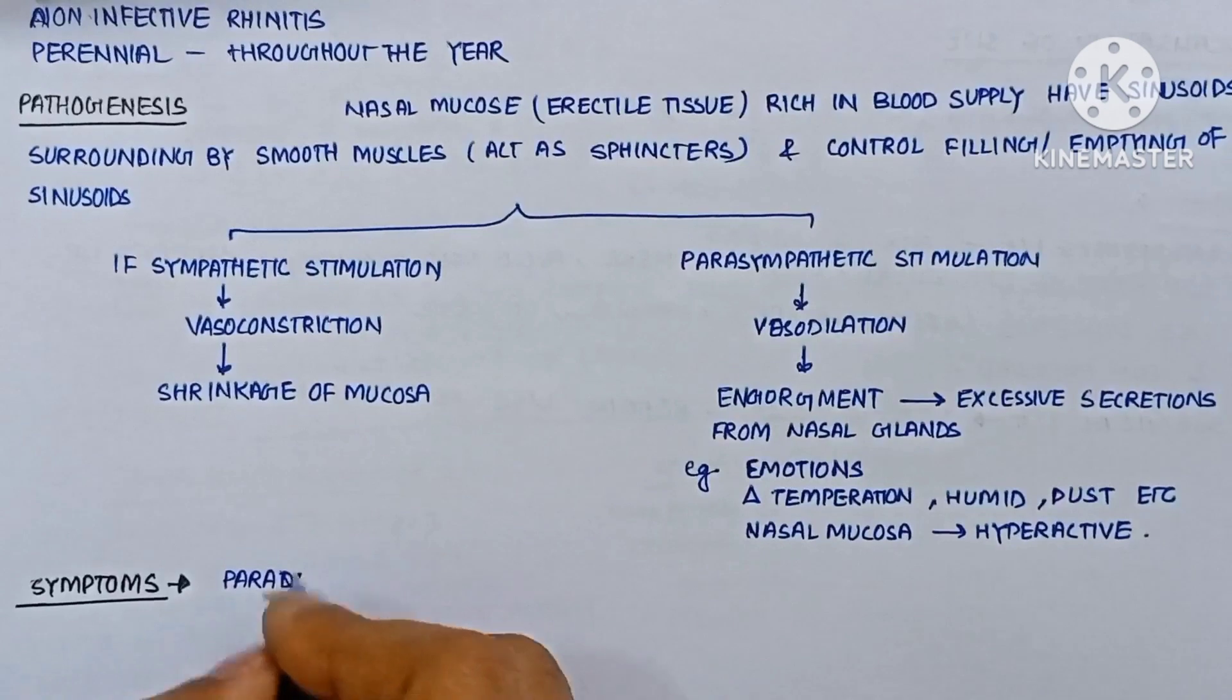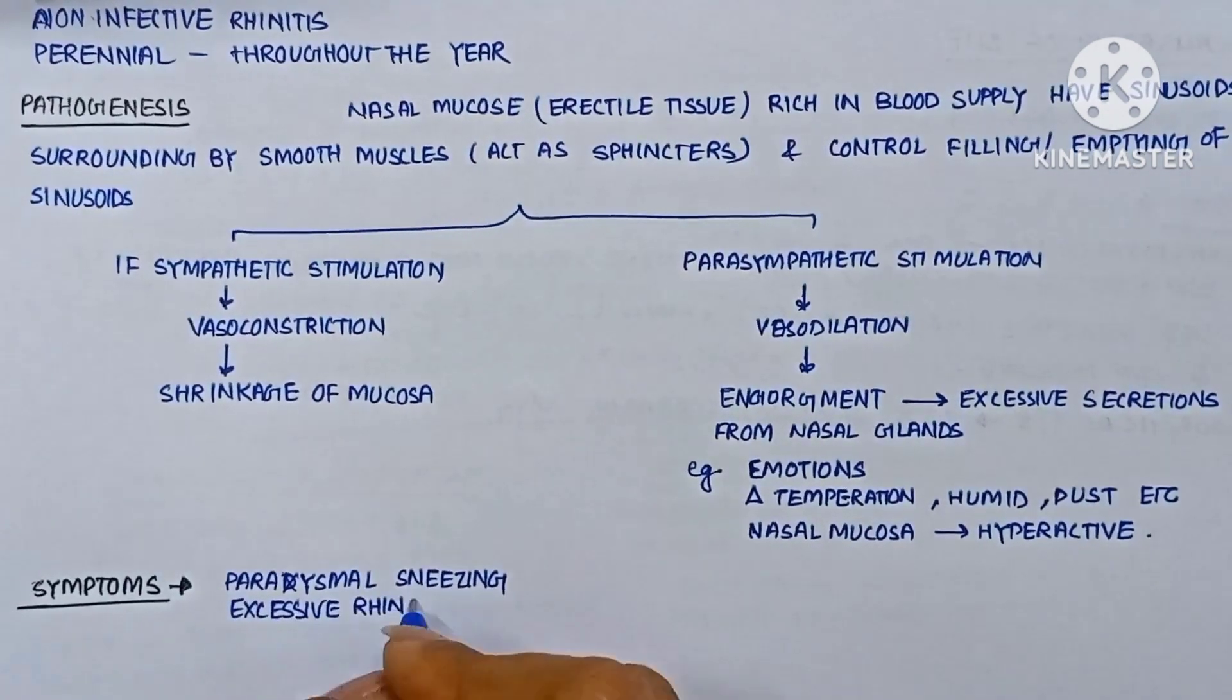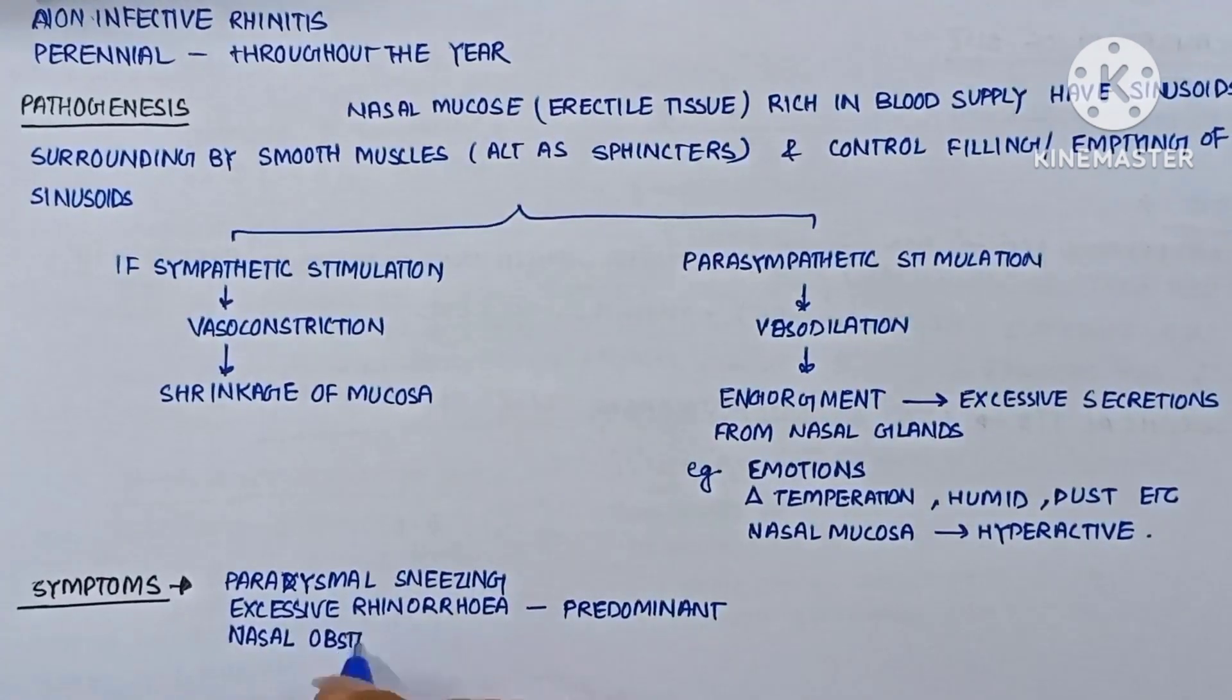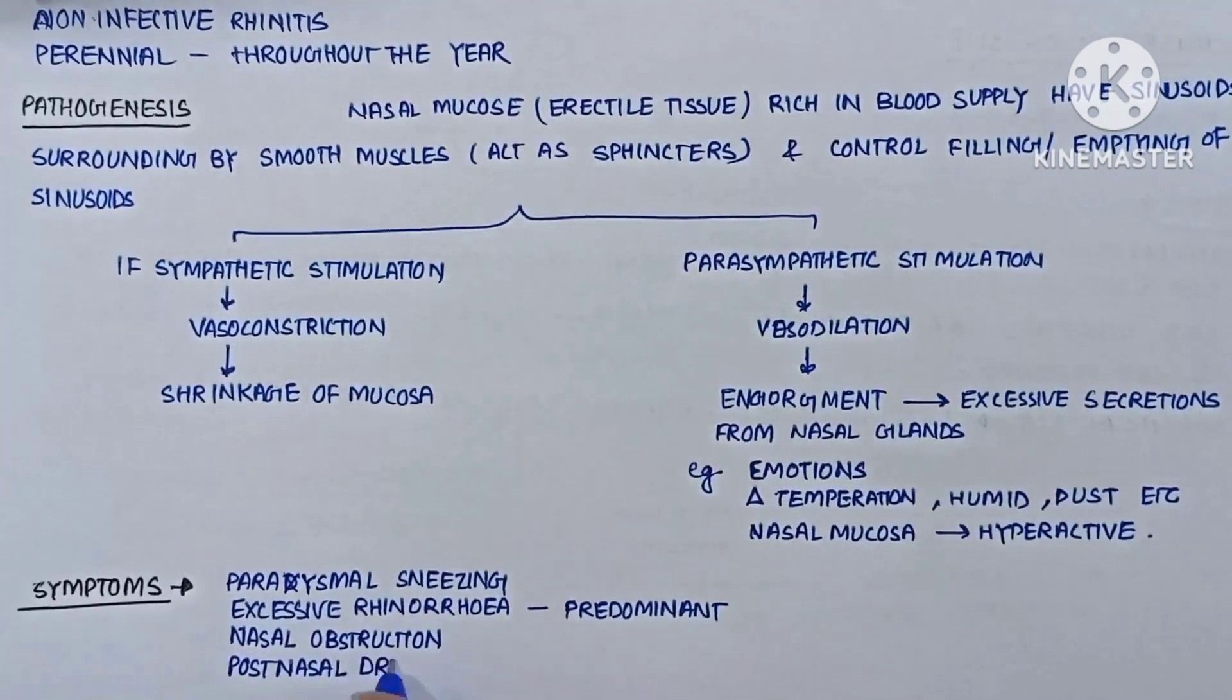Now the symptoms: paroxysmal sneezing, excessive rhinorrhea which is the predominant symptom, nasal obstruction, and post-nasal drip.